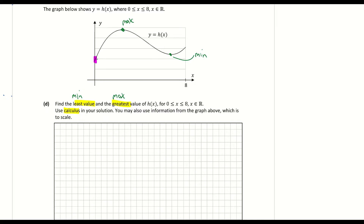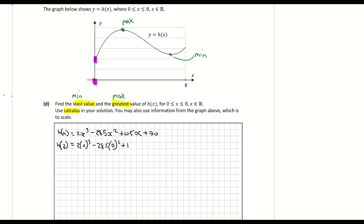The lowest point is at time zero. So I'll take the function from part a — h of x equals 2x cubed minus 28.5x squared plus 105x plus 70 — and sub in zero for x. That gives 2 times 0 cubed minus 28.5 times 0 squared plus 105 times 0 plus 70, which equals 70. So the least value is h of zero, which is 70.